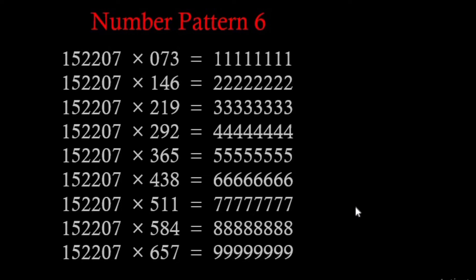Let's see how this pattern works. The entire pattern depends on the first row, because 146 is just double 73. So if we can prove the first row, then the second row is just double the first row, the third row is just triple the first row, and so on. Let's see how this works.